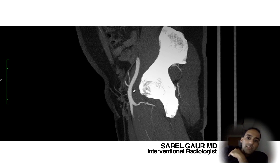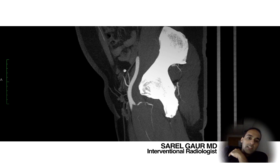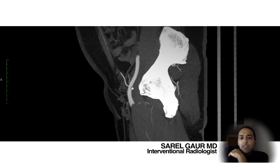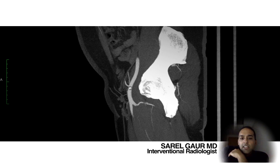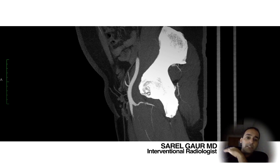Another important landmark is this vessel here. You can see this small vessel coursing anteriorly and cephalad towards the head — that is the inferior epigastric artery. Below this level we have the CFA. From here to here, we have the common femoral artery, common because it splits into the SFA and the profunda femoris. Importantly, this is right at the level of the femoral head.